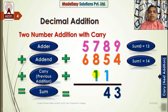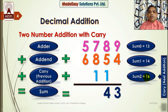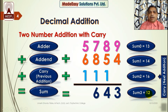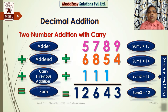Continuing: 5 plus 6 plus carry 1 equals 12, so 2 is the sum and 1 is the carry for the next addition. But there are no more digits, so we just place this carry as the final sum digit. This gives us our complete result, and this is how we follow the decimal addition procedure.